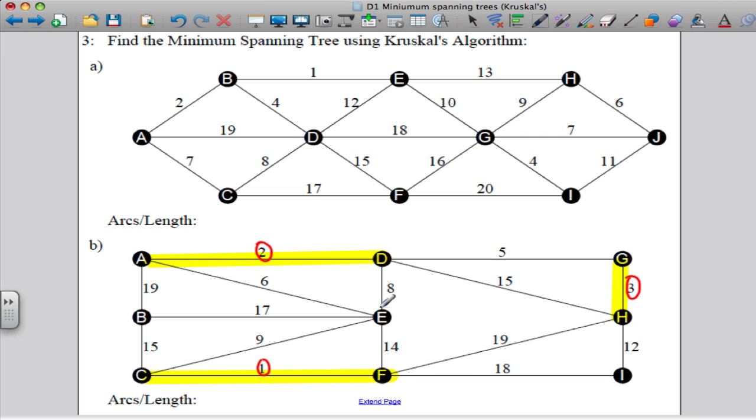Now what have I got left? I've got a six, an eight, a 17. Looking around, I've got a five here. Again, that looks minimal of all the ones left. So I'm going to include that five and circle it. Okay. Now what have I got? Twelve, eighteen, nineteen, fifteen, fourteen, eight, nine, seventeen, six. Six is the smallest now. So I'm going to include that one as well.